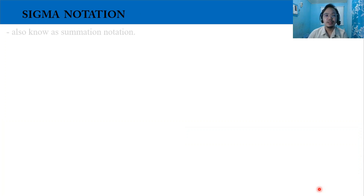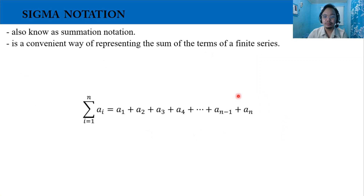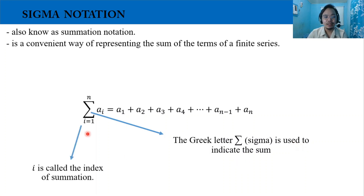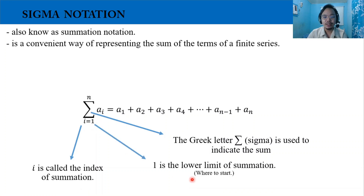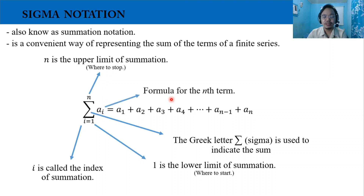Now let's discuss sigma notation, also known as summation notation. It is a convenient way to represent the sum of the terms of a finite series. The Greek letter sigma is used to indicate the sum or total. The variable i is called the index of summation. The lower limit of the summation is where we start — in this given, we have 1. The upper limit n is where we stop. The expression a sub i is the formula for the nth term, and a sub 1 plus a sub 2 plus a sub 3 going to a sub n are the terms of our series.